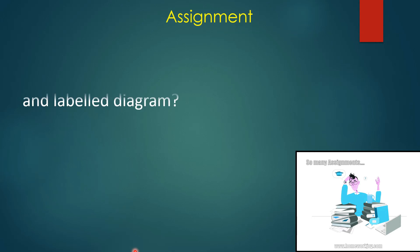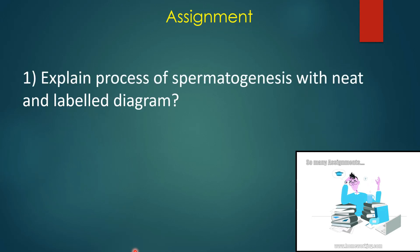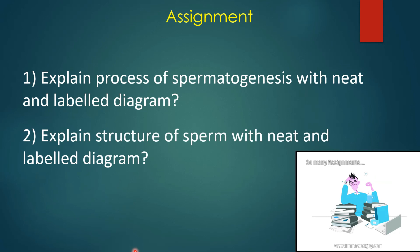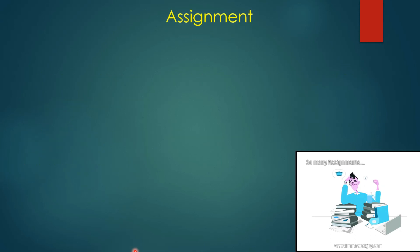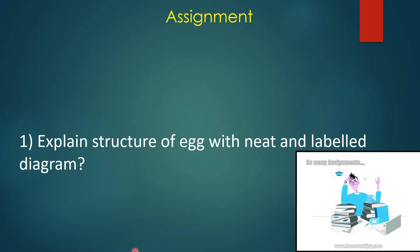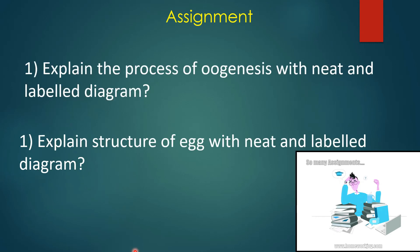Take down your assignments. First, explain the process of spermatogenesis with a neat and labelled diagram. Second, explain the structure of sperm with a neat and labelled diagram — in both cases, the diagram is very important. Next assignment: explain the structure of the egg with a neat and labelled diagram, and explain the process of oogenesis with a neat and labelled diagram. I hope this module was very helpful to you all. Thank you for attending this module. We will come back with the next module.